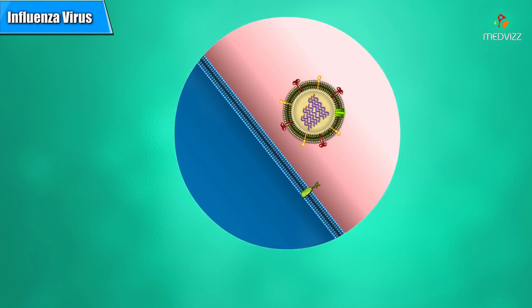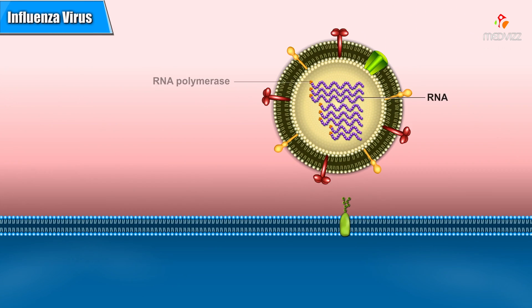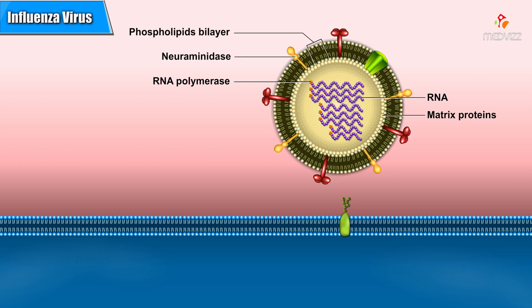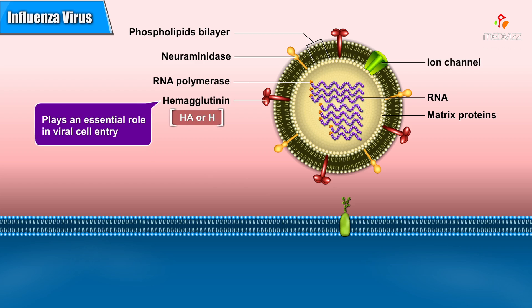Influenza A contains a genome of single-stranded RNA segments, enzymes required for viral replication inside a host cell, and a shell of matrix proteins. The virus also has a phospholipid envelope with several embedded proteins, including a molecule called hemagglutinin, abbreviated HA or H, which plays an essential role in viral cell entry.